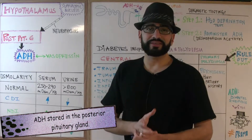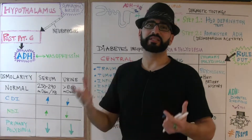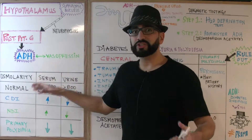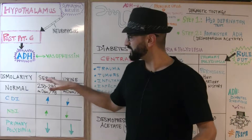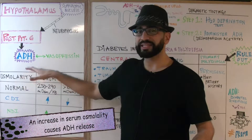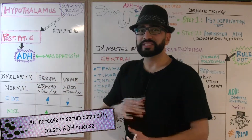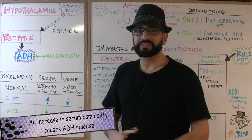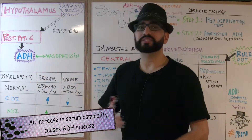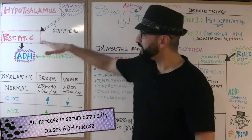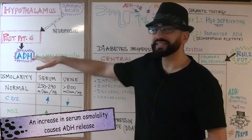Now it's going to stay there until it's actually needed. What does it respond to? It responds to changes in the serum osmolality levels. So when the serum osmolality levels get too high, the posterior pituitary gland is going to release the antidiuretic hormone.